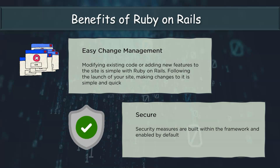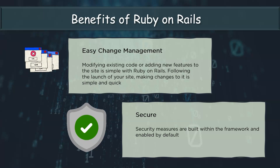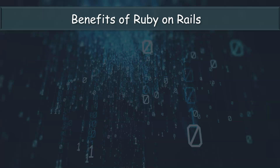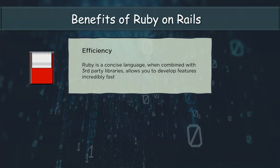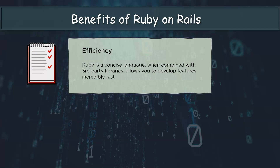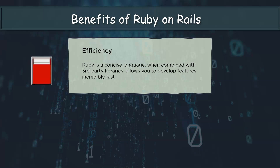Talking about security, the framework is installed and enabled by default along with various security features, so you are following a secure development procedure when you utilize Ruby on Rails. Talking about efficiency, Rails employs frontend and backend abilities to construct web applications that are simple and easier to create. A single page web application employs Rails for the backend and possibly another framework for the frontend, be it Angular or React. As a result, the application's best attributes are reliant on Ruby on Rails, making it extremely efficient.